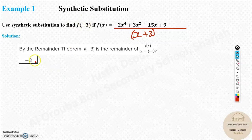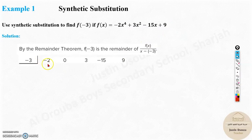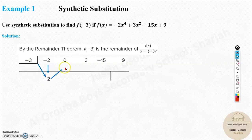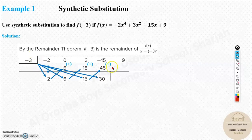For synthetic substitution, you can directly take minus 3. Write the coefficients: minus 2 for x⁴, nothing cubed so 0, then 3, minus 15, and 9. Bring the first term down, multiply with minus 3 — negative times negative is positive — giving plus 6. Add them to get 6. Continue: write negative 18, add them, then multiply to get 45, add to get 30. Then 30 times minus 3 is minus 90. The answer you get is negative 81.